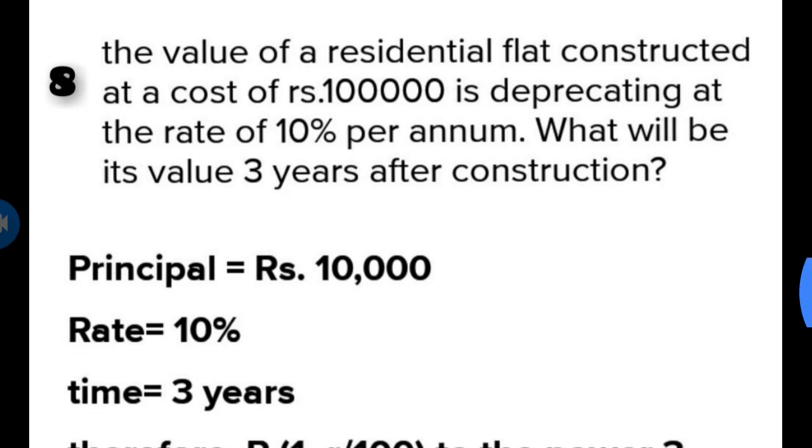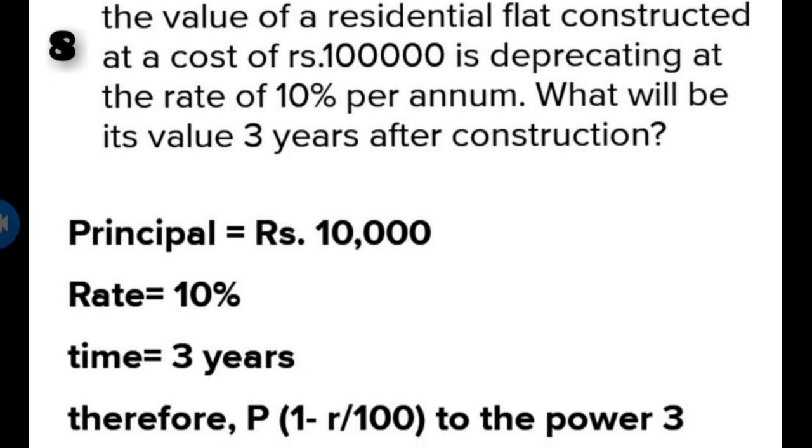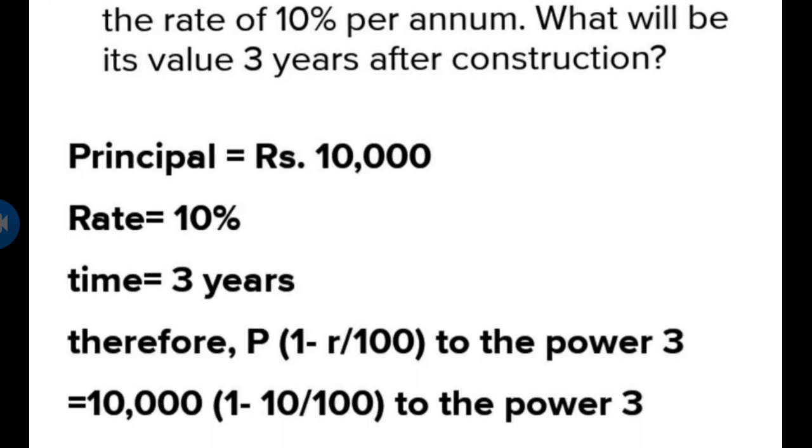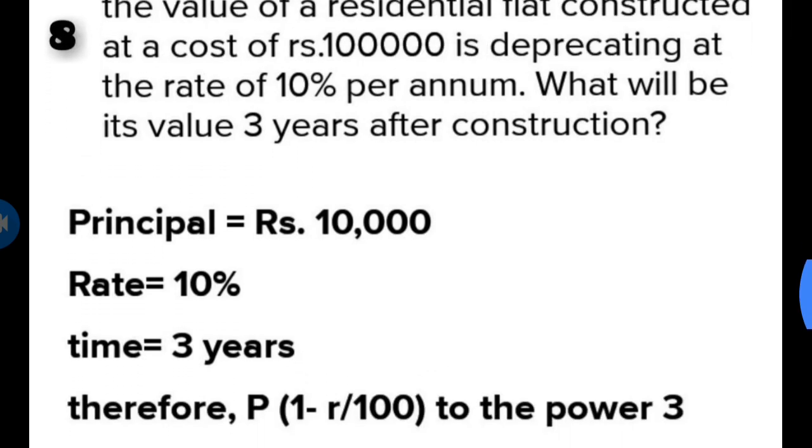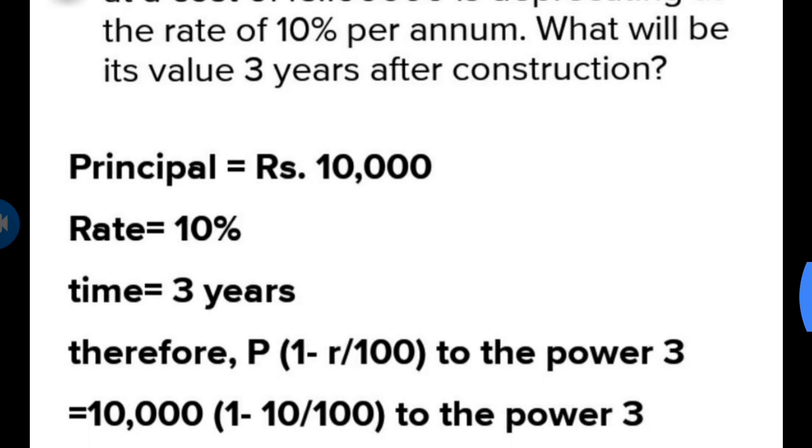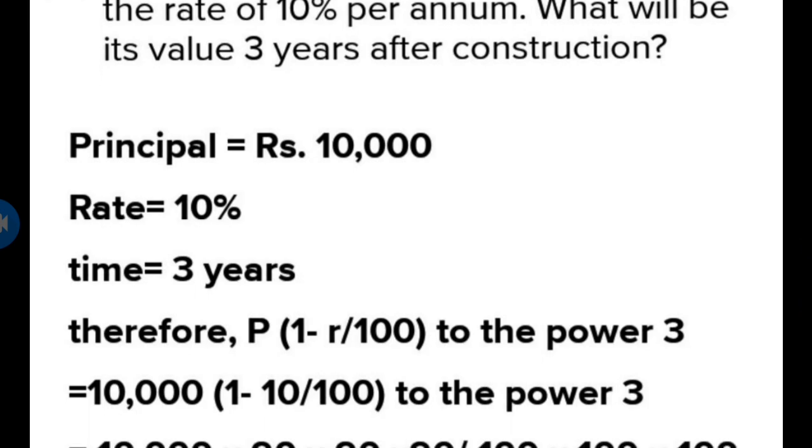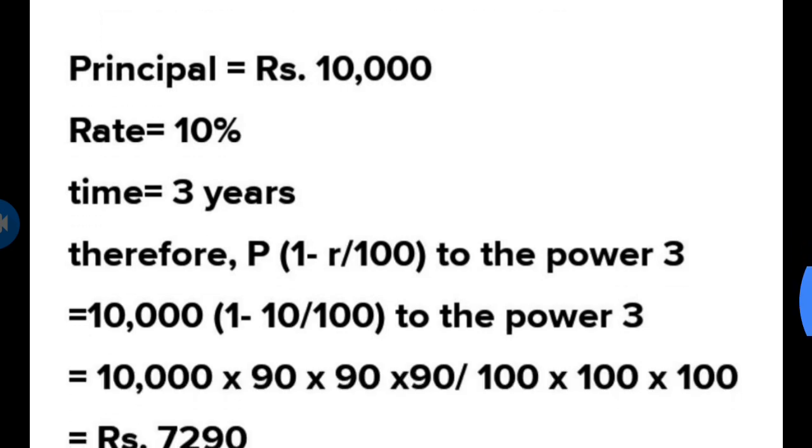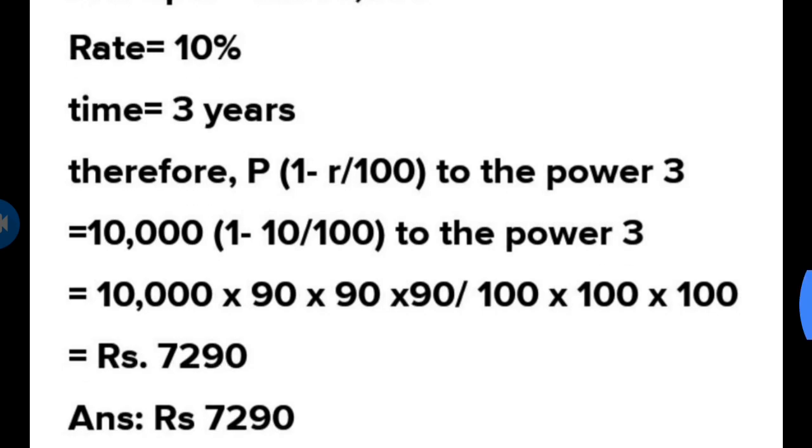In depreciation, we use a minus sign. Principle is 100,000, it is 10%, and time is 3 years. Therefore, we will put up the formula: P times (1 minus r upon 100) to the power of 3. Then we solve that equation to get our answer.